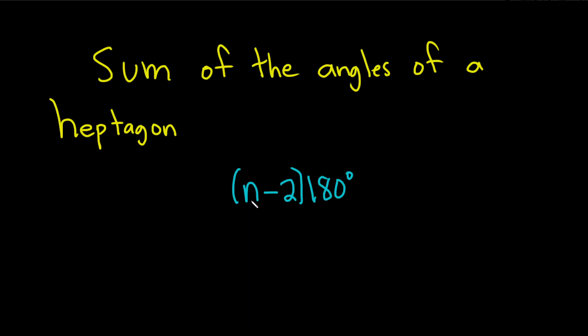So all we do in this problem is figure out the n and then plug it in. So the heptagon has 7 sides, so we just plug in 7. So it'll be 7 minus 2 times 180 degrees.